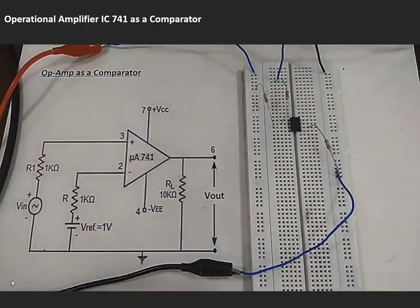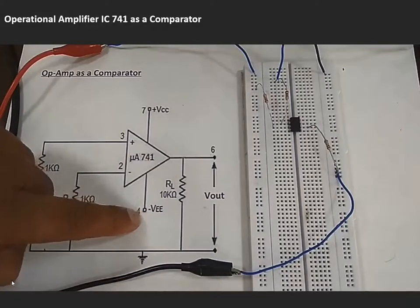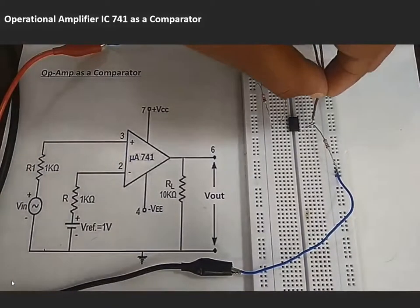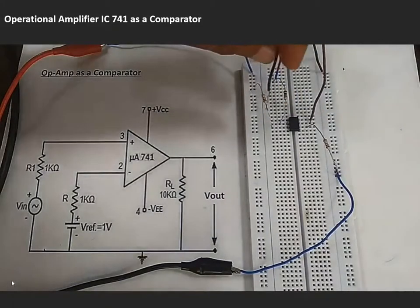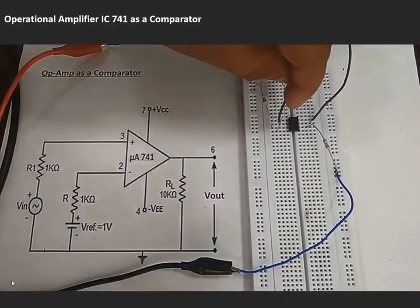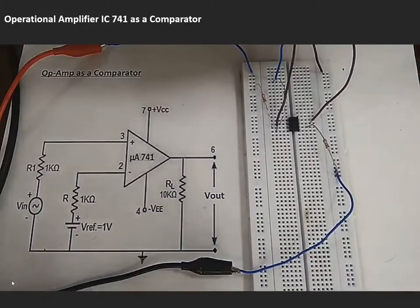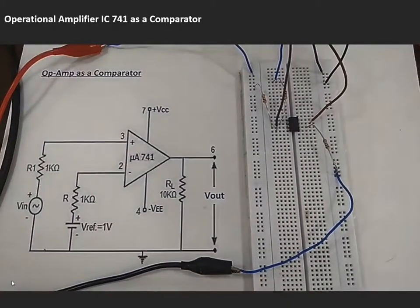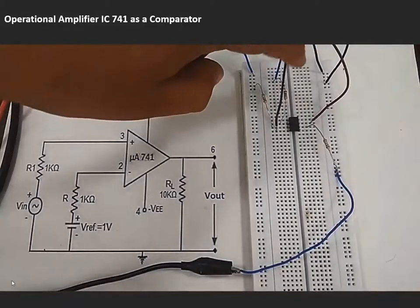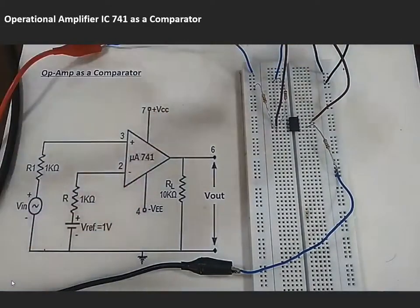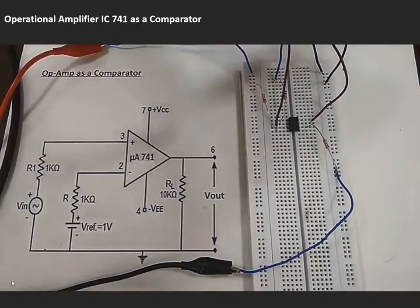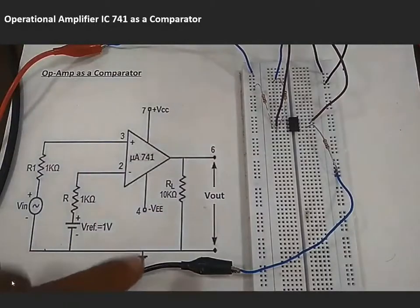Next step: connection of VCC and VEE supply voltage. Plus 12 volt connects to IC pin number 7, and minus 12 volt connects to IC pin number 4. The breadboard ground must be connected to the DC supply ground using a jumper wire. The minus 12 volt wire goes to pin 4, the plus 12 volt wire goes to pin 7, and the black ground wire from the DC supply - all grounds have been shorted on the same track.